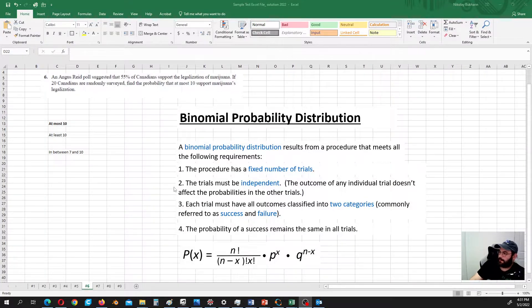Okay, problem number six. Binomial probability distribution. Something similar you should expect on the midterm exam.